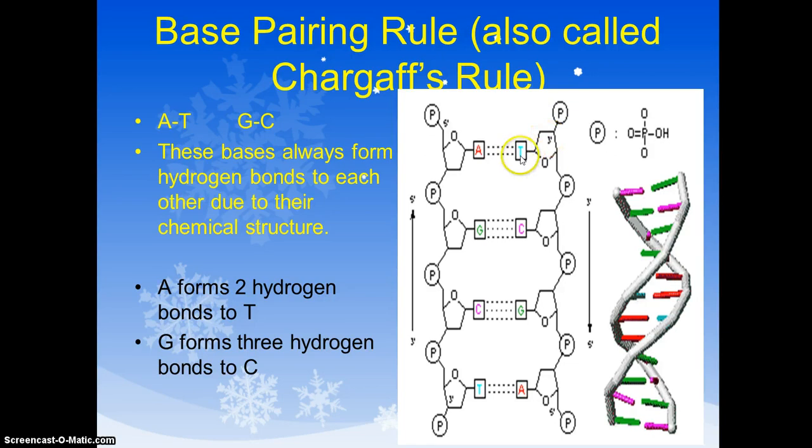Phosphate, deoxyribose, thymine. There's the phosphodiester bond. Phosphate, deoxyribose, cytosine. There's the phosphodiester bond. So phosphodiester is going down the sides with hydrogen bonds in the middle.